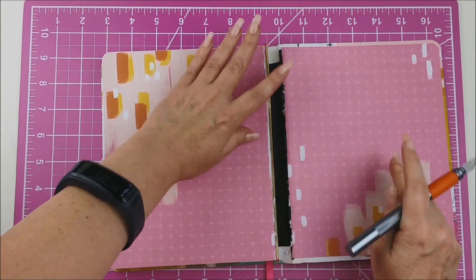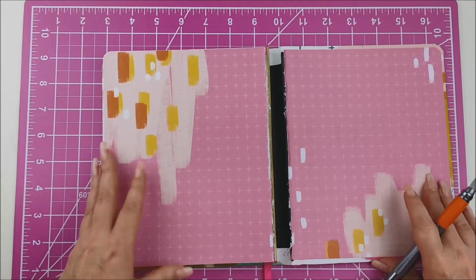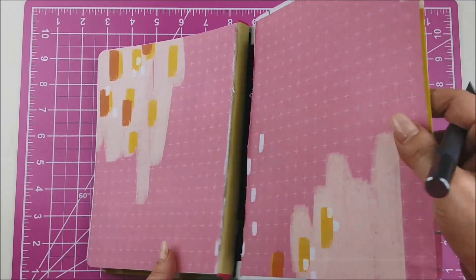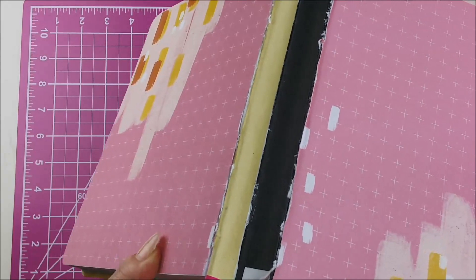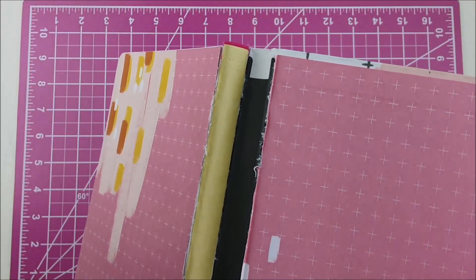And see how it just pulled right away? Perfectly pulled away, and then there's the rest of the binding. See that? Super easy.